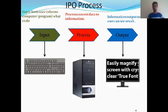Now let's look at the IPO process. IPO means Input, Processing, and Output. Input devices help give input to our computers — input informs the computer programs what to do. Then the CPU, which is the processing device, converts data into information. Finally, the output device presents the information so the user can see the result.